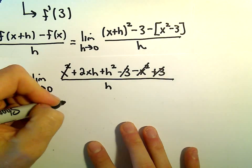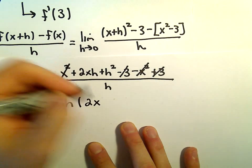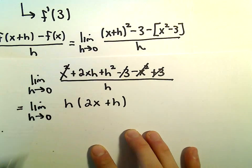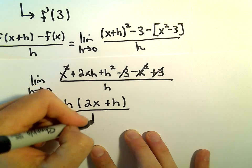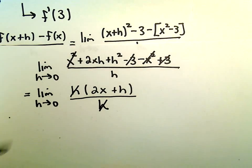We could factor an h out of the numerator. Let's see, h times 2x would give us 2xh. And then h times positive h would give us positive h squared. We've got h in the denominator. We can just cancel out the h's.